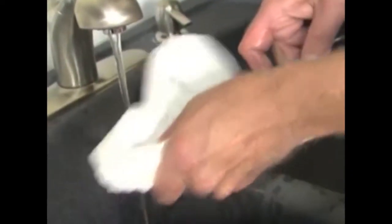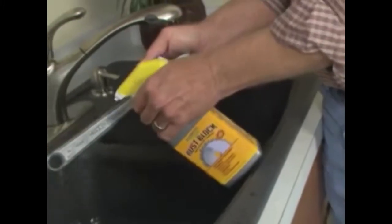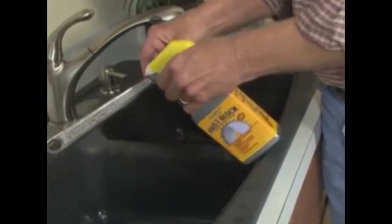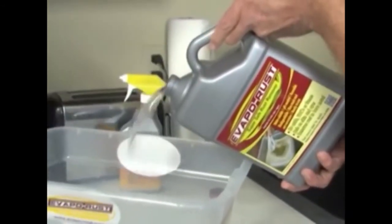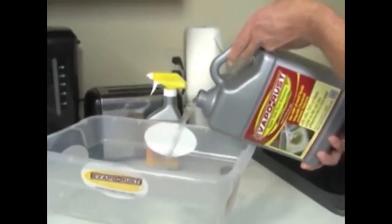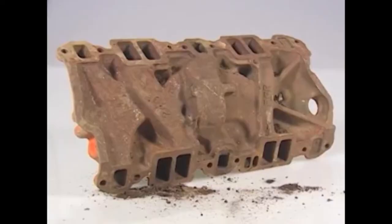Once finished, remove the article and rinse it with water to remove carbon residue. Let it dry, then prime, paint, or spray with Rust Block rust inhibitor. Evaporust is reusable—save it to use over and over to clean all your rusted items.